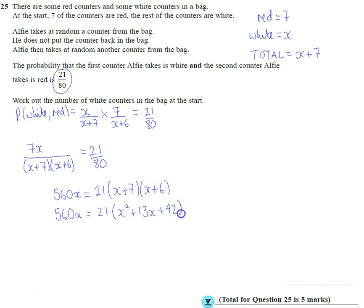So if I multiply up 21 from everything, I get 21X squared plus 21 times 13 is 273X, and 21 times 42 is 882.